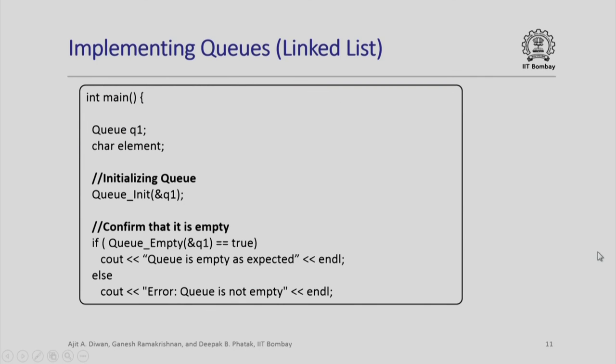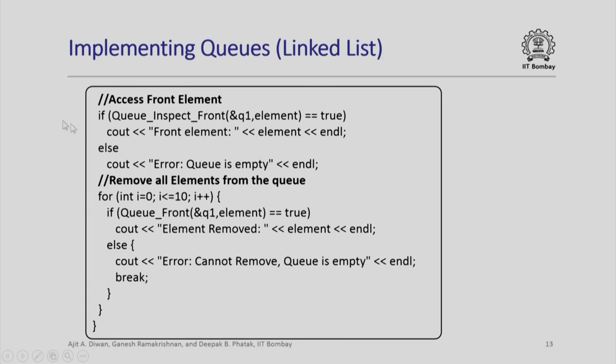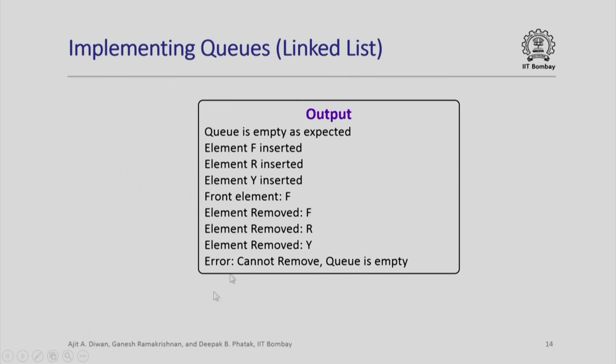Having seen all of this, it is very simple to write a main program to illustrate these activities. I will not spend much time on that because this program is written exactly like the previous program when we implemented queue using arrays. There is absolutely no change, and the functions will behave slightly differently because they are handling linked list rather than arrays, but the main program will work exactly like that. I will insert an element F, then I will insert say two more elements R and Y. If I try to insert any additional element it will get inserted. We have removed that part of the main program now. To access front element, this is the illustration. To remove all elements from the queue, this is the code - again exactly same as the past code. You can run this program and you will see that the output you get is very similar to the output that you got when you implemented the queues using arrays.